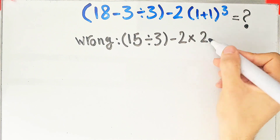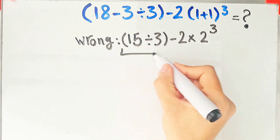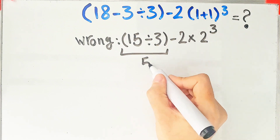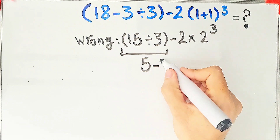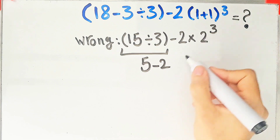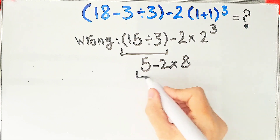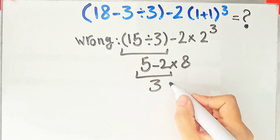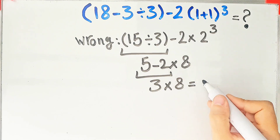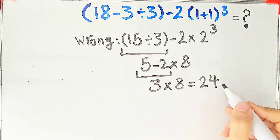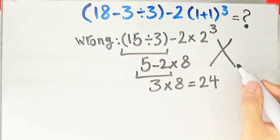That equals 2, then to the power of 3. So 15 divided by 3 equals 5, then 5 minus 2 times 2 to the power of 3. 2 to the power of 3 equals 8, 5 minus 2 equals 3, and 3 times 8 equals 24. They say the final answer equals 24 — but this answer is definitely wrong.